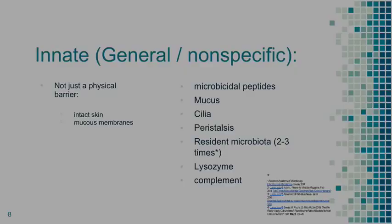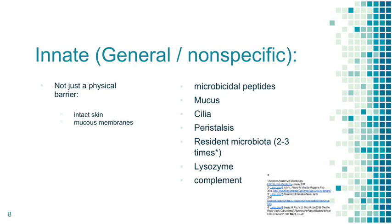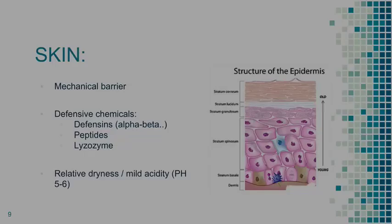The innate immune system is not just the physical barrier. It includes intact skin, mucous membranes, microbicidal peptides, mucus, ciliary movements, cough reflexes, sneezing, peristalsis — in food poisoning you vomit to prevent the pathogen from going further. A relatively recent addition is the microbiome, mainly in the GI tract. We have about two to three times more bacteria than cells. Lysozymes and complement are also part of innate immunity.